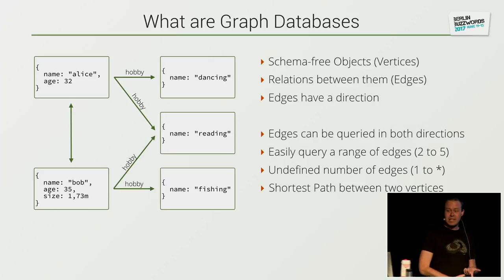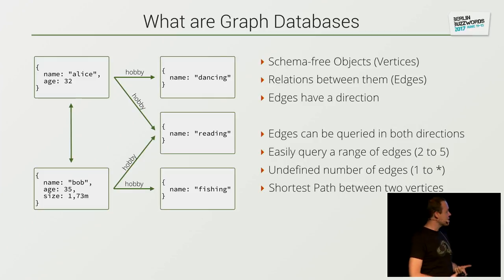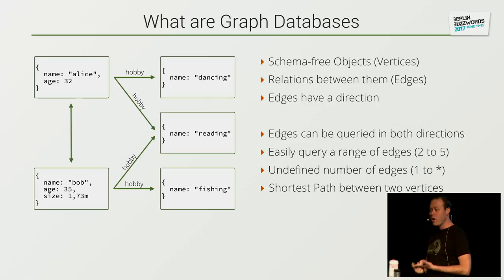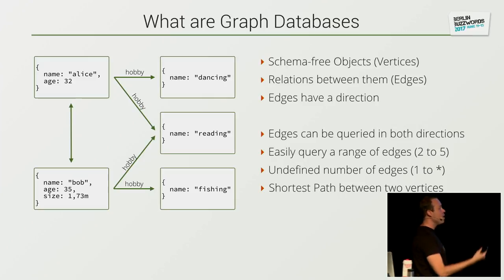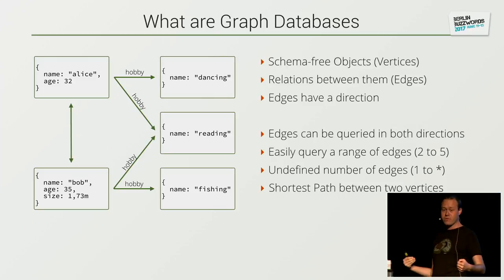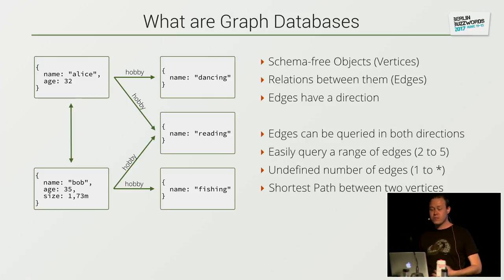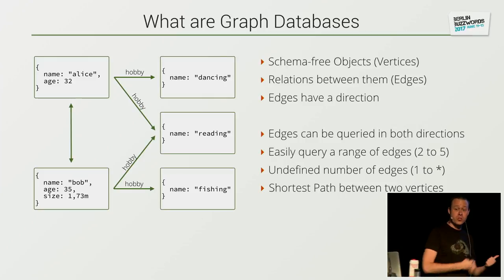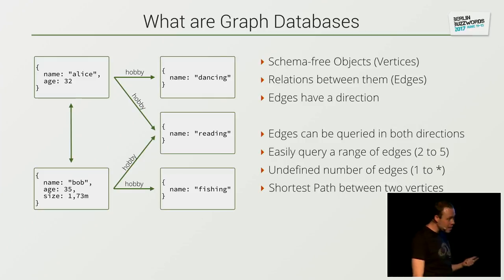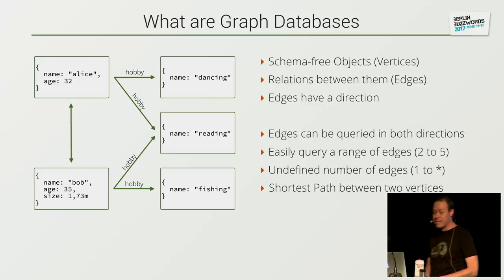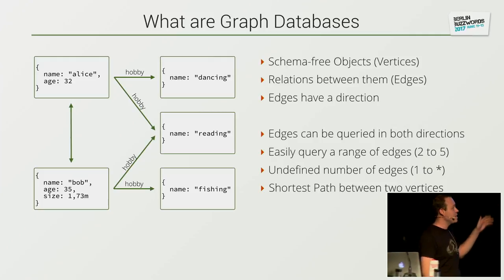One thing graph databases can do that classical relational databases can't is you can easily do queries over a range of edges. You can say do up to, or between two to five connections between several vertices. If you do that in a relational query, you will do one join for two elements, one join for three, one for four, one for five, and then one join to put everything together — like one page of query. In a graph database: one line, and you're off to go.